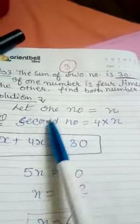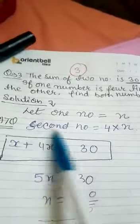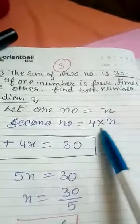So I don't know the number to find out. Solution: Let one number = x. Second number, according to the question, one number is four times the other, so second number is four times x, 4 × x.